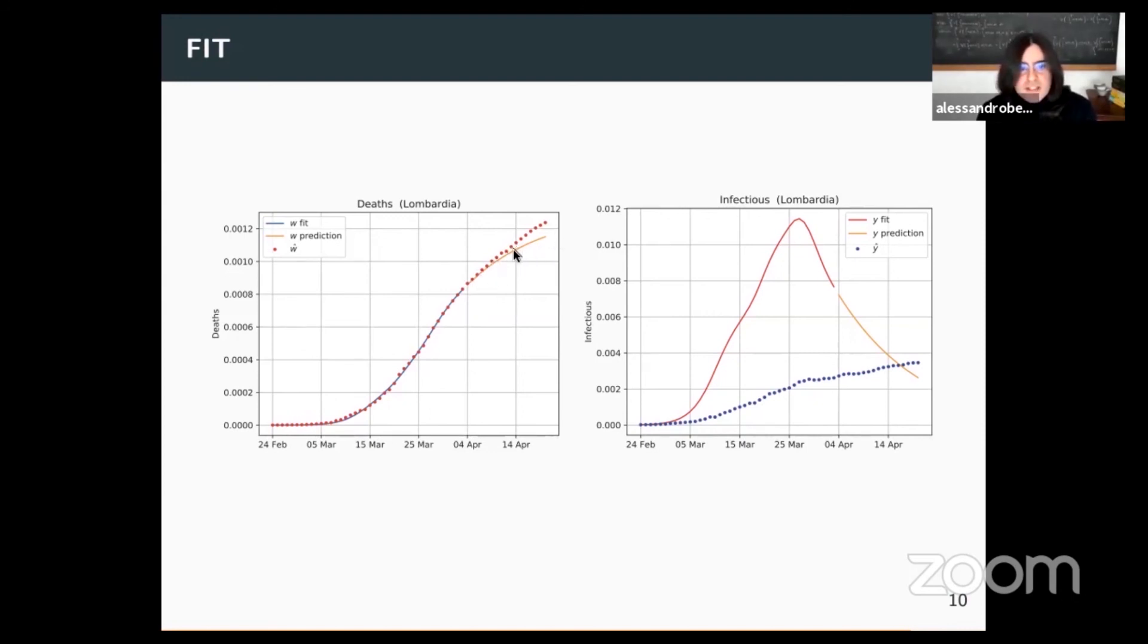While on the right side, you can see our estimate for the infectious, that is plotted together with the real data that we collected from the official measurements. And you can see here that there is this strange behavior at the end where our prediction go below the actual data, which is rather suspicious in this case.